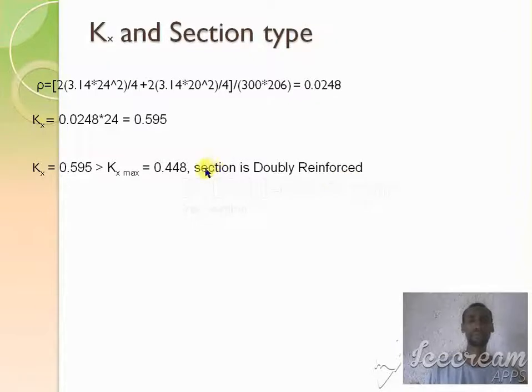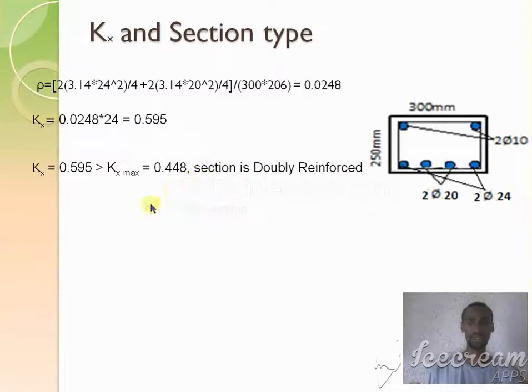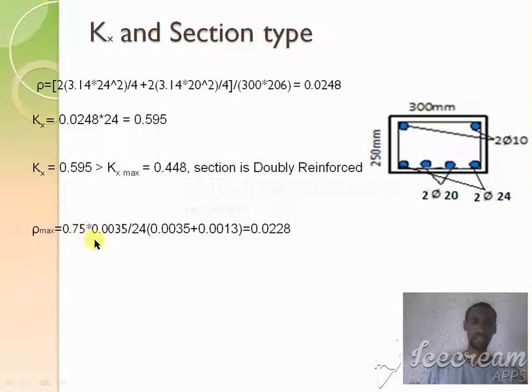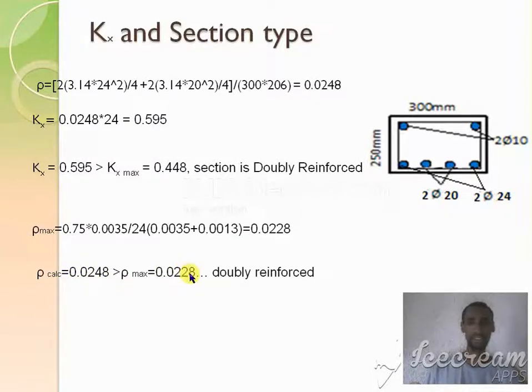In the same way we can follow the approach using ρ calculated with ρ max formula. It is 0.75 of ρ balanced. This is the maximum strain of concrete at the extreme compression end. This is M. Then ρ max becomes 0.0228. Then ρ calculated is, as you can observe here, it is 0.0248. Here we observe that 0.0248 is greater than ρ max. This means that the cross section is doubly reinforced.